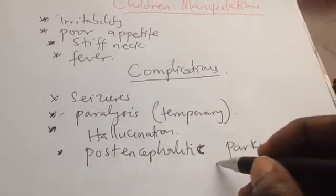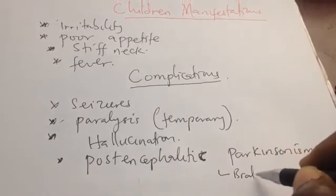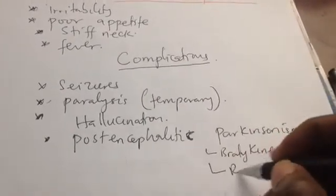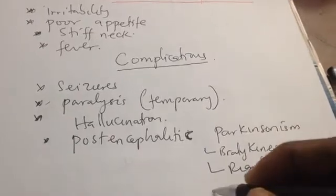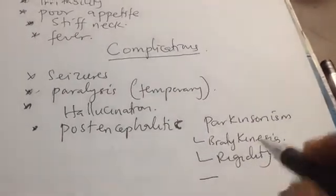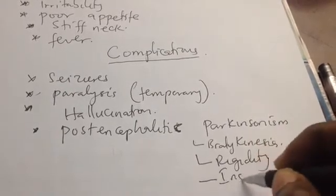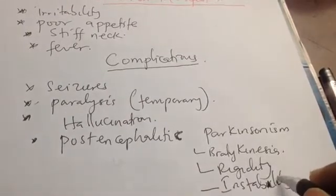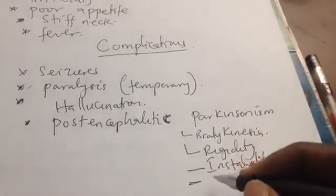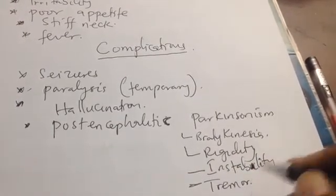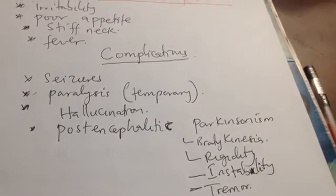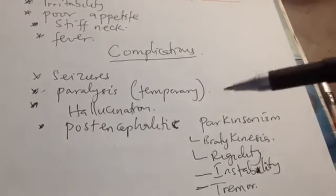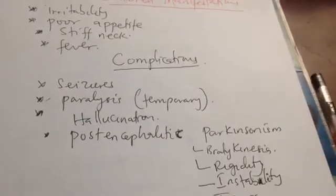The symptoms of post-encephalitic Parkinsonism include bradykinesia, rigidity — especially cogwheel rigidity — and postural instability. The patient will manifest these Parkinsonian symptoms, so you really have to take a history of prior encephalitis, as it may not be true idiopathic Parkinsonism.